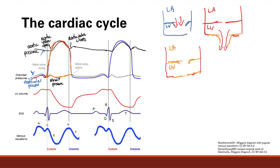Finally, because the left atrial pressure exceeded the left ventricular pressure at early diastole, the mitral valve is going to open and we'll have blood flowing again, filling up the left ventricle. It's going to slowly fill up the ventricle and increase in pressure until we restart the cycle.